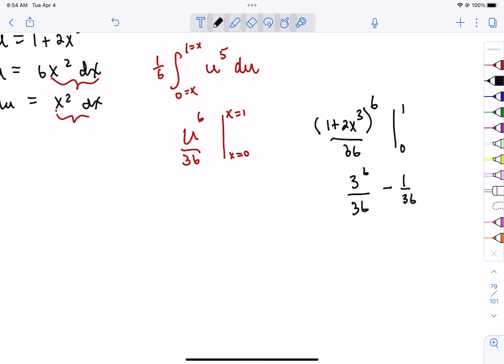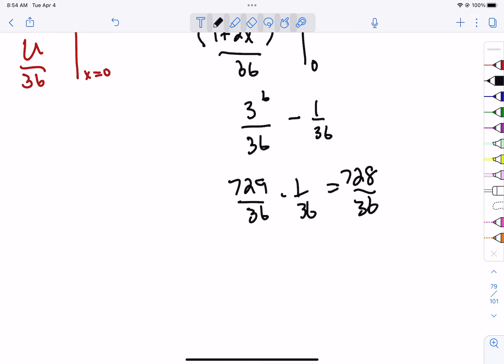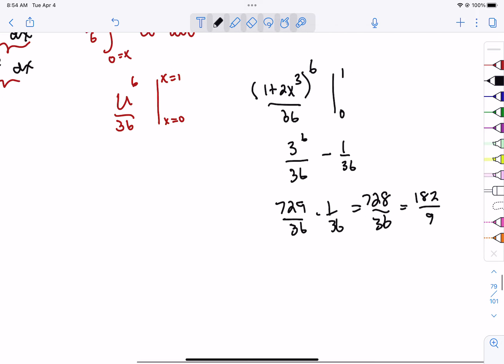So what the heck is 3 to the sixth power? That would be 9 times 9 times 9, 729. So this is 729 over 36 minus 1 over 36 is 728 over 36. At least it reduces by 2. So if you divide by 4, you get 182 over 9.